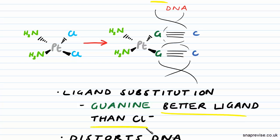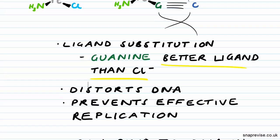We have our cisplatin complex now bound to our DNA, and it distorts the DNA and prevents effective replication. Cisplatin prevents the cells from multiplying and the DNA from copying, and that's what allows it to act as an effective anti-cancer drug. Tumor cells and cancer cells multiply very rapidly, and that's what makes them so dangerous and allows tumors to grow. If this drug can prevent cell replication, it is very useful in the treatment of cancer.